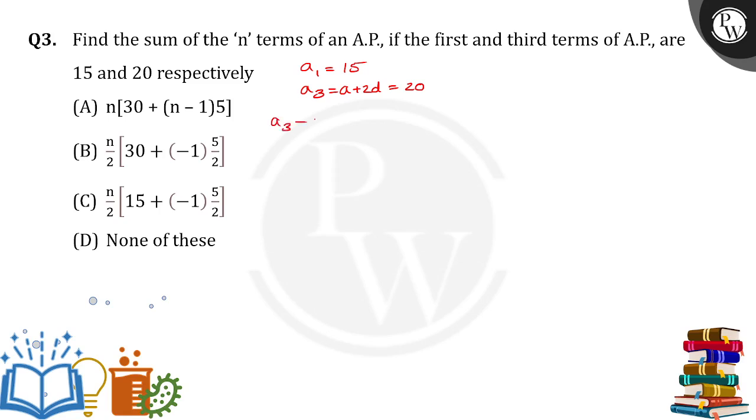Right, so if I do a3 minus a1 which means a plus 2d minus a is 20 minus 15. So a and a cancels, 2d equals 5, so d is equal to 5 by 2.